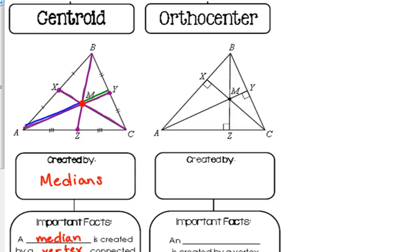So if AM is twice the length of MY, let's say that MY is 2. If MY is 2, then what is AM? Four. If MY is 2, then AM is four. It's twice as long. What's the whole length? Six. Four is what proportion of six? Two thirds of six.